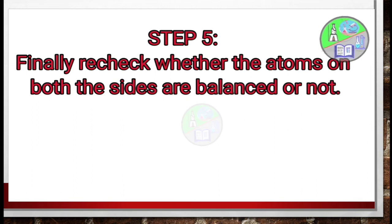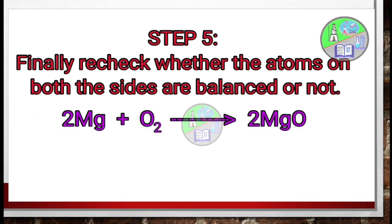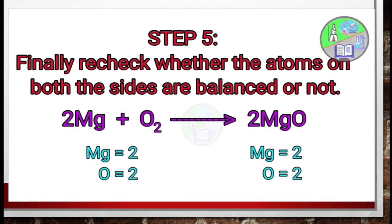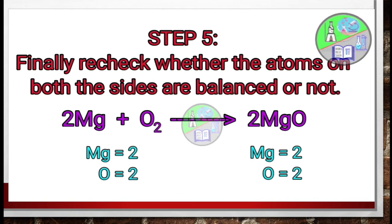And finally, recheck whether the atoms on both the sides are balanced or not. And here we can see on the reactant side, magnesium has 2 atoms. On the product side, magnesium is having 2 atoms. In the reactant side, oxygen is having 2 atoms. In the product side also, it has 2 atoms. So finally we can say that the equation is completely balanced.